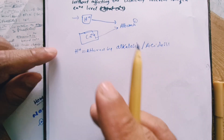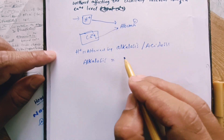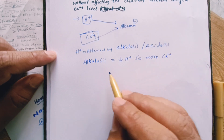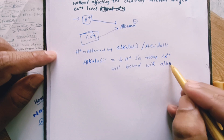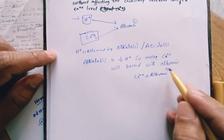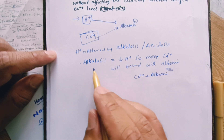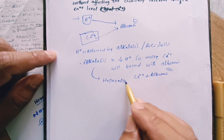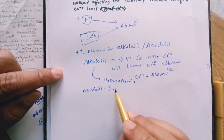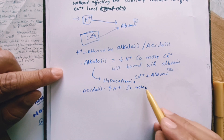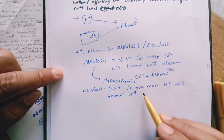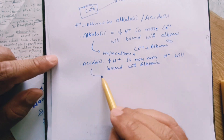In alkalosis, there is a decrease in proton, so more calcium is going to bind with albumin and the free calcium will decrease. That's why we can say that alkalosis causes hypocalcemia. In acidosis, there is an increase in proton, so more proton binds with albumin and space for calcium will be less, meaning ionized calcium is going to increase.